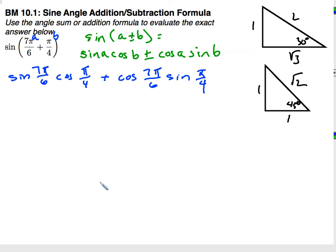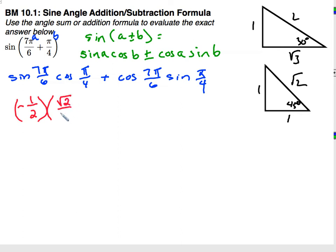Next come the actual values. For 7π/6, the reference angle is π/6, which is 30 degrees. Sine is opposite over hypotenuse, so 1/2. However, 7π/6 is in quadrant 3, where sine is negative. So I'll have negative 1/2 times cosine(π/4), which is the 45-degree angle — cosine is adjacent over hypotenuse, that's 1/√2, which is √2/2, plus cosine(7π/6).